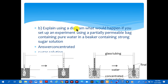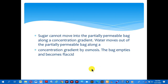B. Explain using a diagram what would happen if you set up an experiment using a partially permeable bag containing pure water in a beaker containing strong sugar solution. The answer: sugar solution cannot move into the partially permeable bag along the concentration gradient. Water moves out of the partially permeable bag along the concentration gradient by osmosis. The bag becomes empty, relaxed, or flaccid.